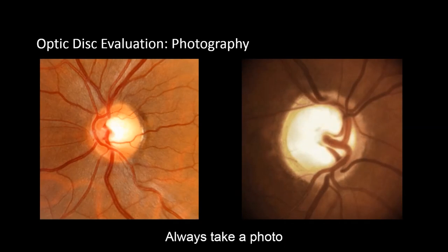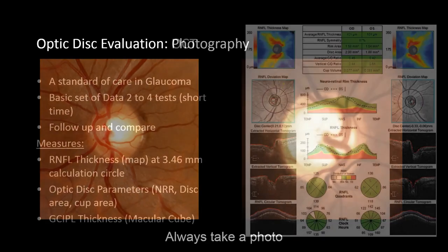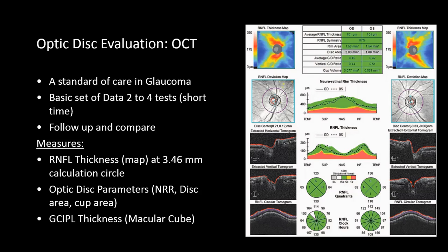Optic disc photography is the best way to document your findings and educate your patient. Photographs lack depth, and requesting stereo photos may prove difficult nowadays — but my advice is always take a photo; it usually proves very valuable for a glaucoma patient. Optical coherence tomography has become a standard practice in following up glaucoma suspects and established glaucoma cases. For a good follow-up, two to four or more baseline tests are done for each eye on the first visit to establish average measurements for future comparison. The retinal nerve fiber layer thickness maps, with their characteristic butterfly appearance, reflect any loss of the nerve fiber layer instantly.